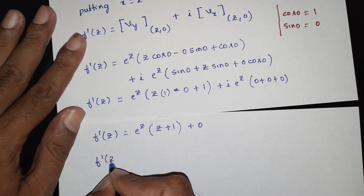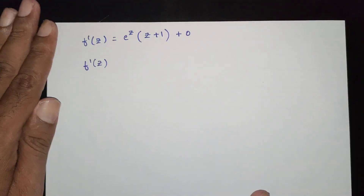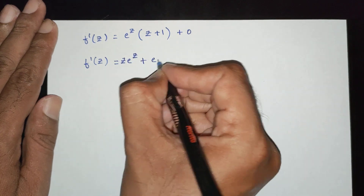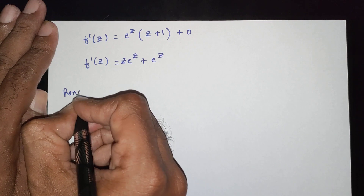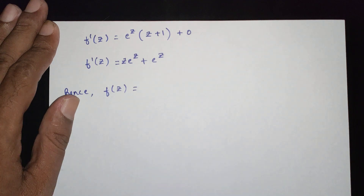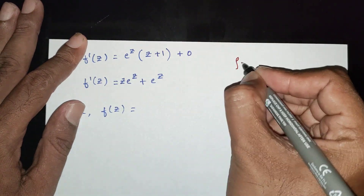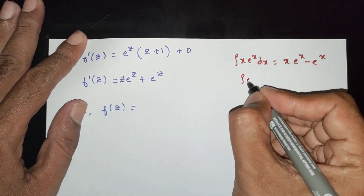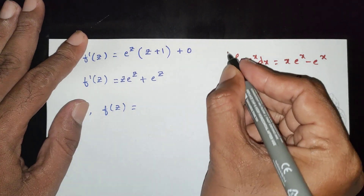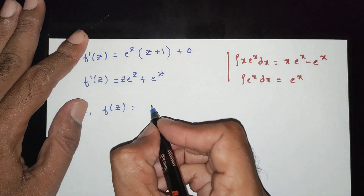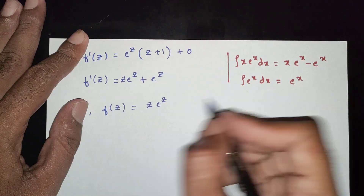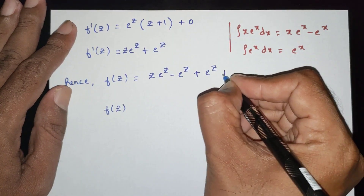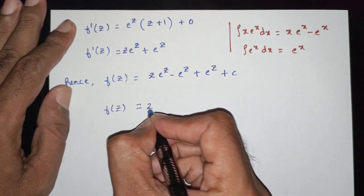So f dash of z is equal to e power z times z plus 1. Hence, integrating: f of z equals integral of e power z times (z plus 1) dz. Using integration by parts, integral of x e power x dx equals x e power x minus e power x. Therefore f of z is equal to z e power z minus e power z plus e power z, which simplifies to z e power z plus constant.